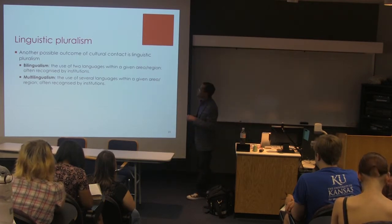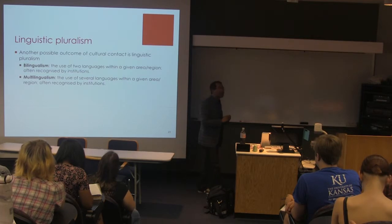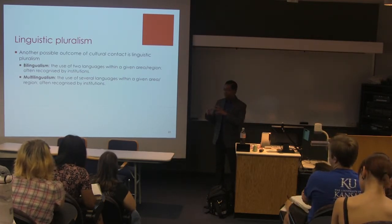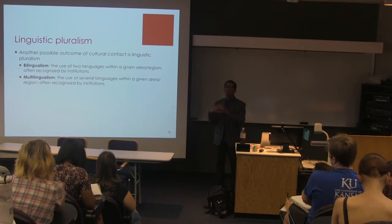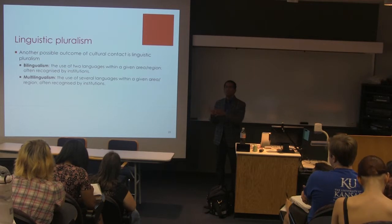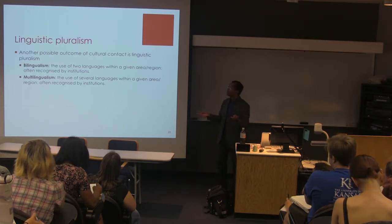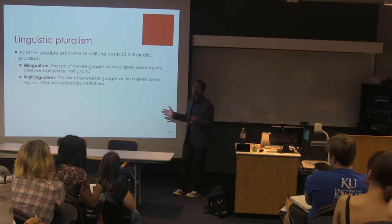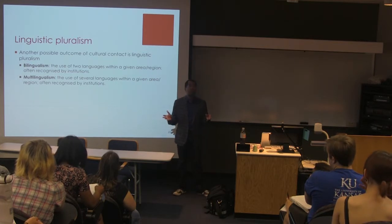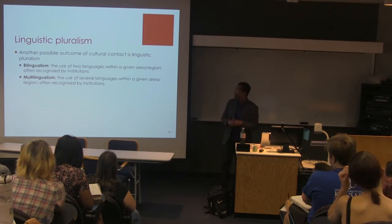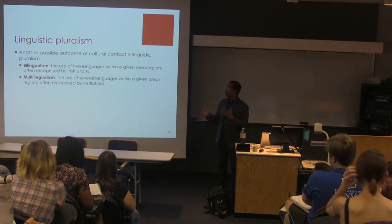How does multilingualism happen? Usually it's because some of the languages spoken in such close quarters begin to look similar after a while, but they're still distinct languages. That gives people a jumping-off point for learning to speak the other languages — they're not completely starting from scratch. But there are cases of people who are trilingual where all three languages are from a completely different language family. That's rarer, but it does happen.